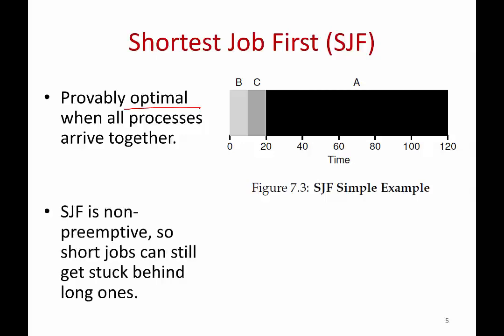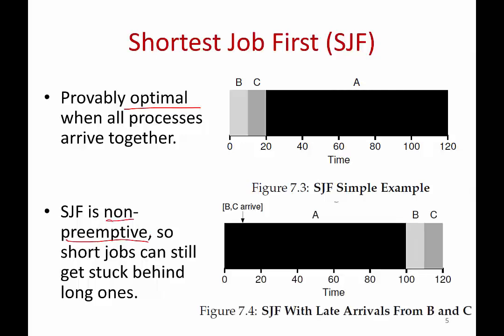Note that Shortest Job First is a non-preemptive policy. It's not useful in a situation where A is already running and B and C arrive. They are still very short jobs and should be done soon, but they still have to wait until A finishes execution — because Shortest Job First does not preempt A as long as it wants to run.